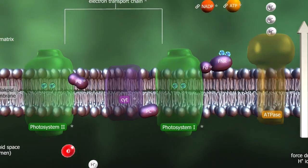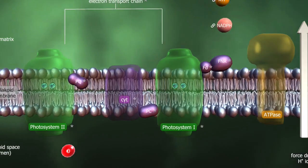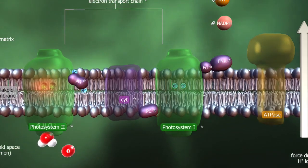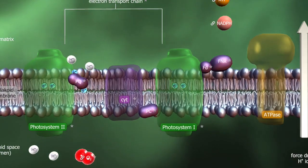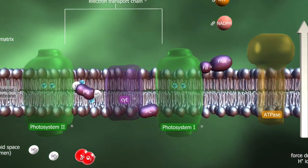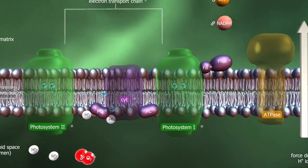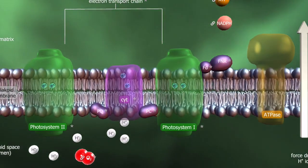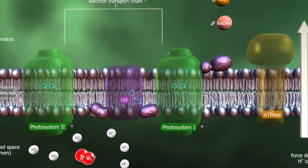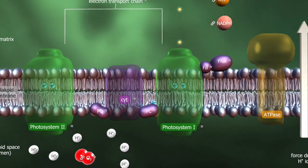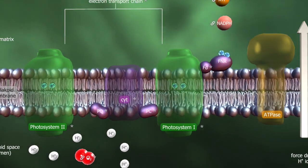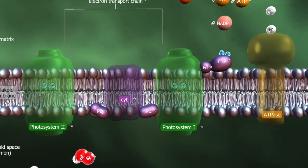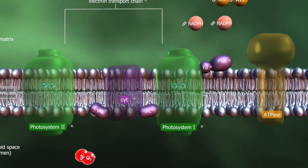The electrons are then transferred to the ferredoxin NADP reductase by ferredoxin molecules. In the light phase, protons accumulate on the inside — that is, the proton concentration of the thylakoid lumen increases, and thus becomes positively charged. This creates an outward driving force. Protons pass to the outside through the ATPase, while energy is released, since the system enters a lower energy state from a higher energy state due to the equalization of charge and concentration. The energy released is used in the production of ATP. The protons and electrons released are accepted by the NADP, which converts into NADPH.